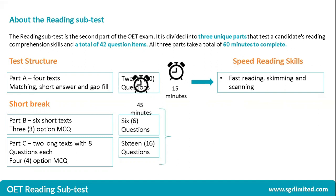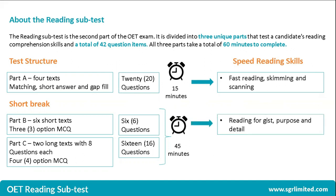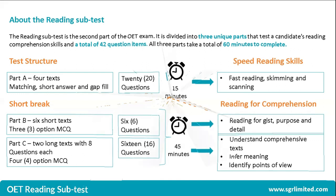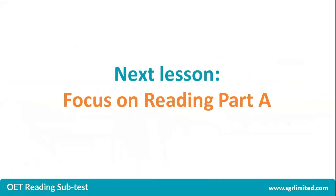Both Parts B and C should be completed within 45 minutes. The skills tested in Part B include reading for gist, purpose, and detail, while the more challenging Part C tests additional reading comprehension skills, including understanding comprehensive texts, inferring meaning, and identifying different points of view. For your next lesson, we will focus on Reading Part A.